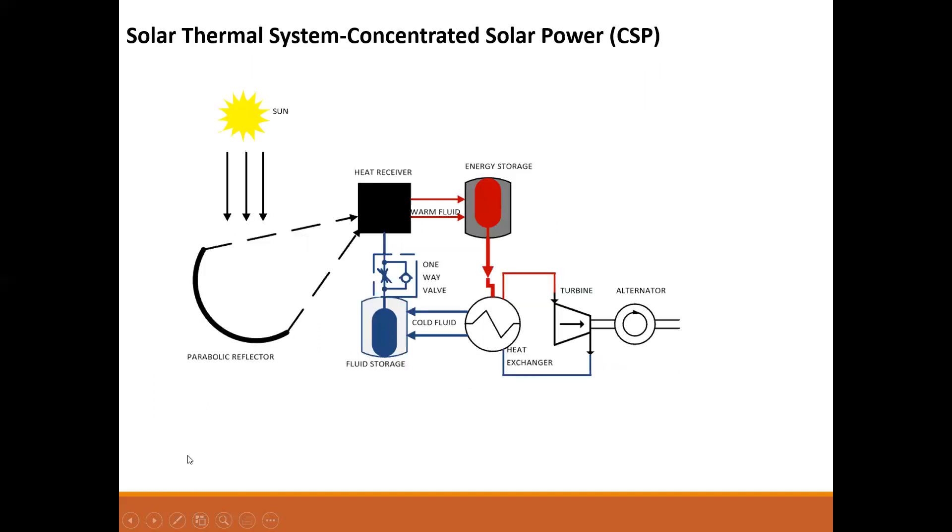We come to the first part, solar thermal system with a pictorial view of a concentrated solar power system. A CSP system is composed of standard components. We have the sun which gives solar radiation, then parabolic reflectors which concentrate the sun's rays to a heat receiver. The heat receiver is connected to energy storage with heat transfer done using a warm fluid.